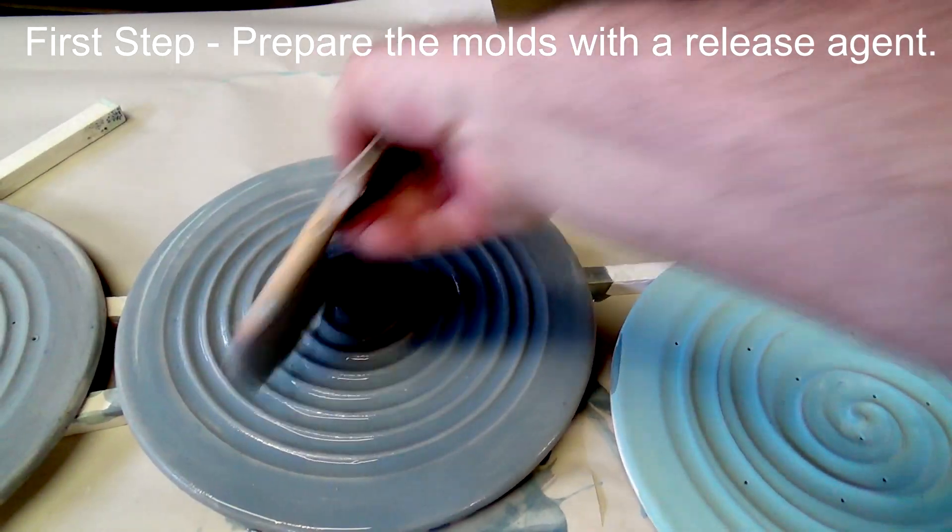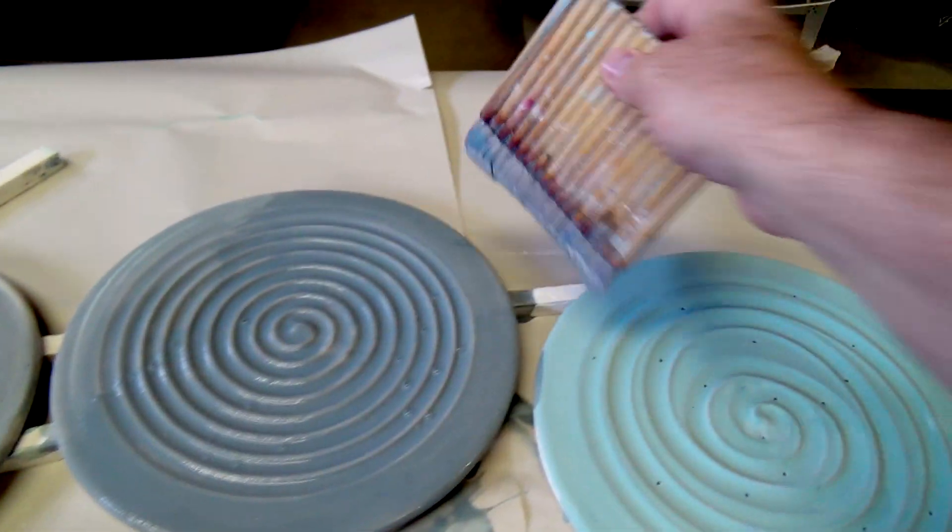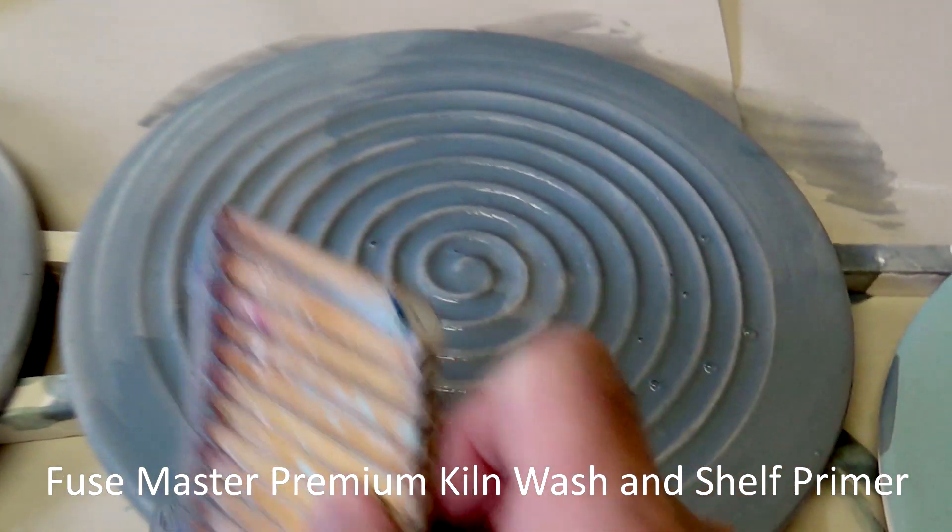The first step is to prepare the mold with a release agent. I'm using Fuse Master Premium Kiln Wash and Shelf Primer, mixed one part dry powder to four parts water.